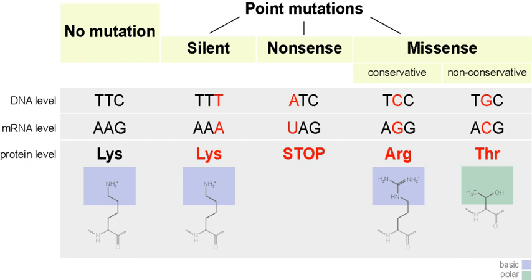Many methods have been proposed to predict the effects of missense mutations on proteins. Machine learning algorithms train their models to distinguish known disease-associated from neutral mutations, whereas other methods do not explicitly train their models, but almost all methods exploit evolutionary conservation, assuming that changes at conserved positions tend to be more deleterious. While most methods provide a binary classification into damaging and benign, a new level of annotation is needed to explain why and how mutations damage proteins. If the mutation occurs in the region where transcriptional machinery binds, it can affect transcription factor binding, altering rates of gene transcription and thus levels of mRNA and protein.